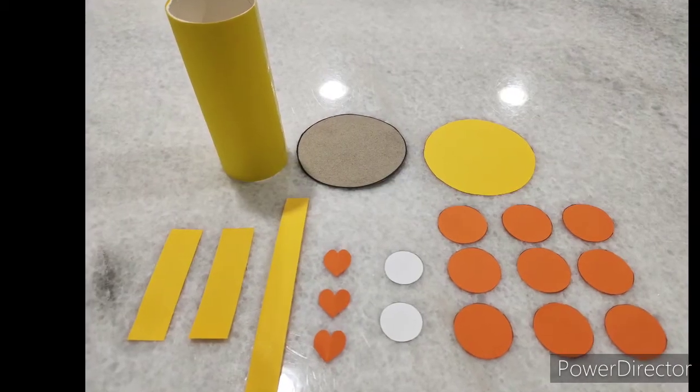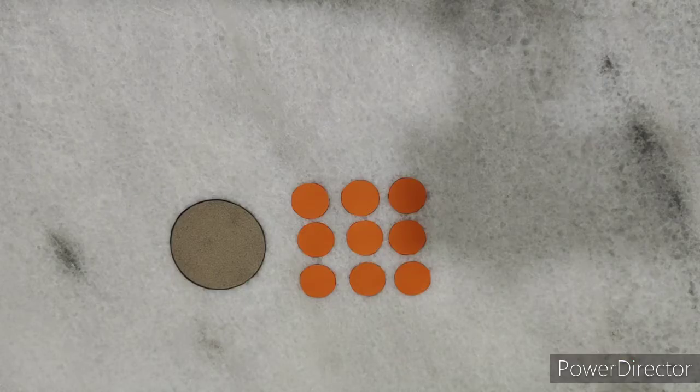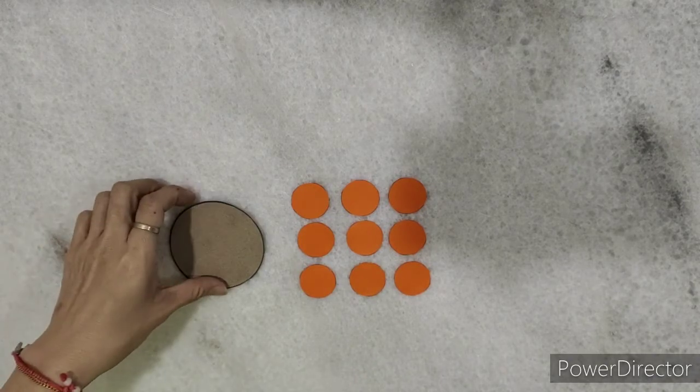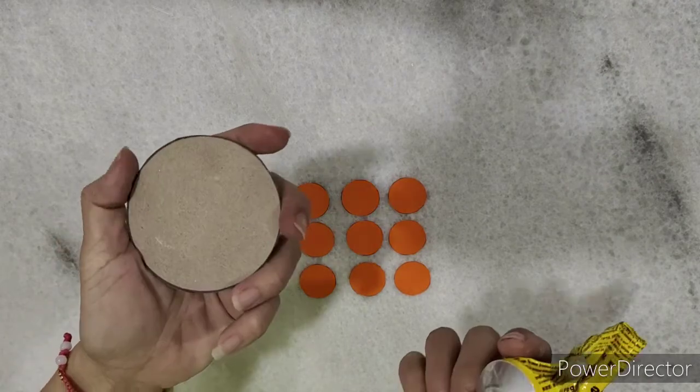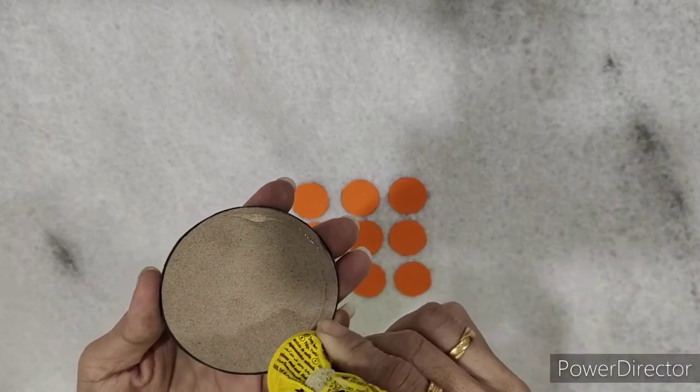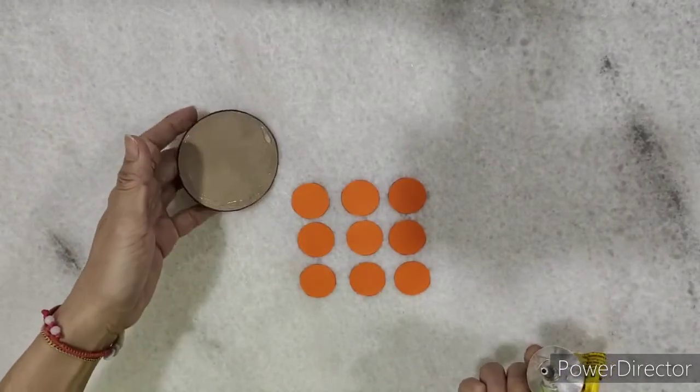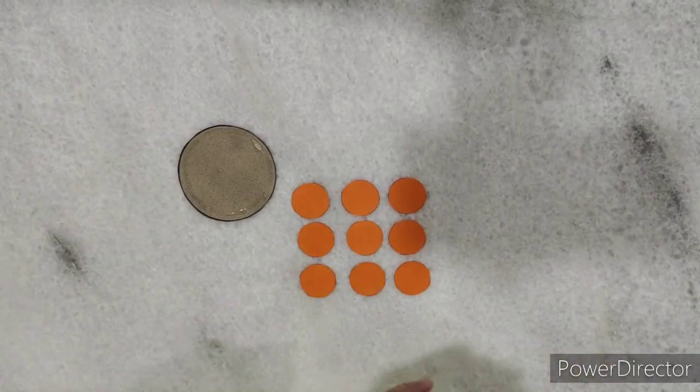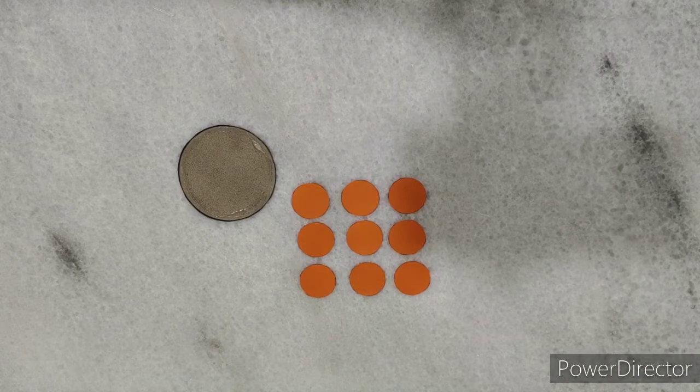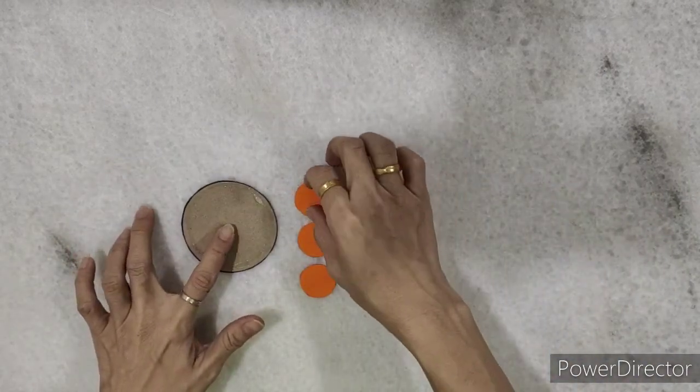We are ready to make our lion with all these materials prepared. First, take the thick paper circle and the color paper circles. Put glue on the edge of the thick paper circle. Place the circles on the thick paper circle, like this.